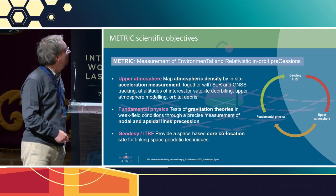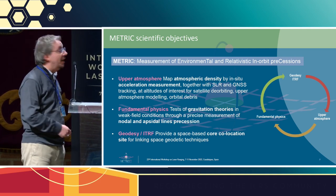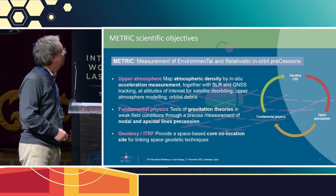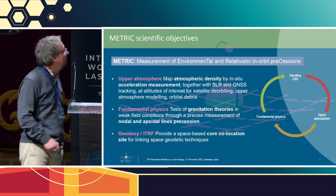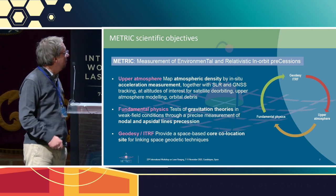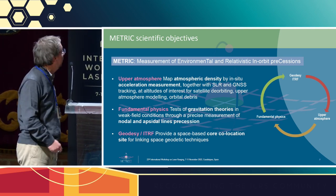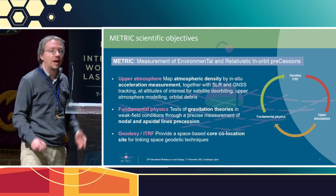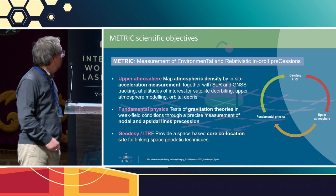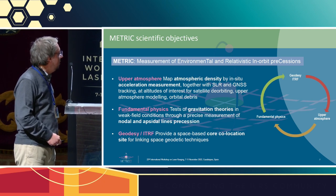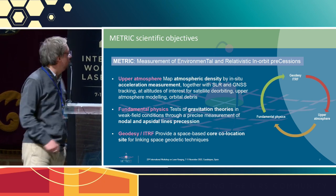The first objective is to map atmospheric density by in-situ direct acceleration measurement together with SLR and GNSS tracking. The second is a refined test of gravitation theories, having at disposal a practically gravitational test mass. The third is to provide a particular space-based co-location site.